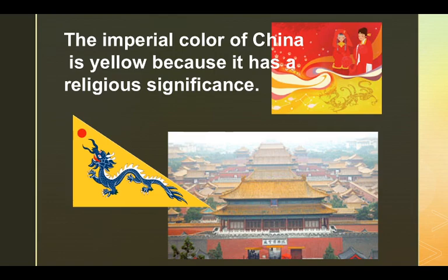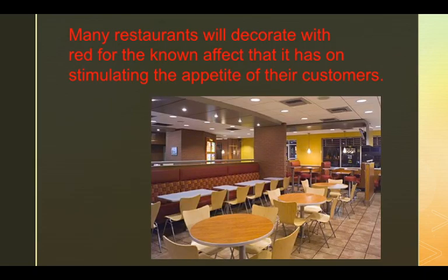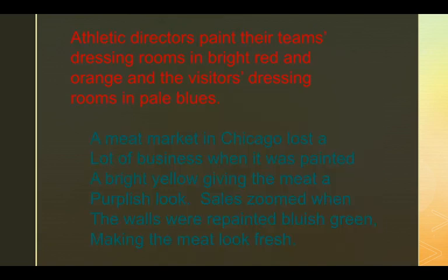The imperial color of China is yellow because it has religious significance. In Greece and Rome, green was believed to have protective powers, and purple, long ago, was restricted for use by the nobility. Many restaurants decorate with red because it stimulates customers' appetite. Athletic directors will paint their team's dressing rooms bright red and orange, and visitors' dressing rooms in pale blues — the red excites their team while the blue calms the other team down.